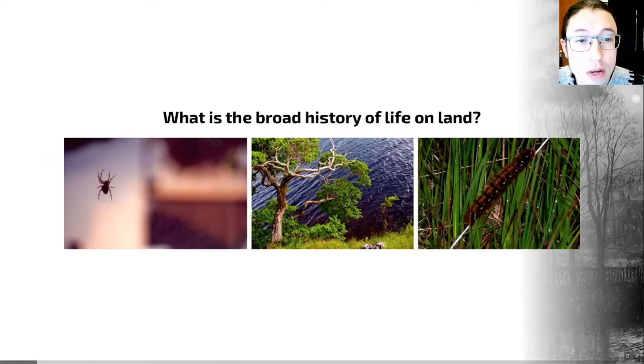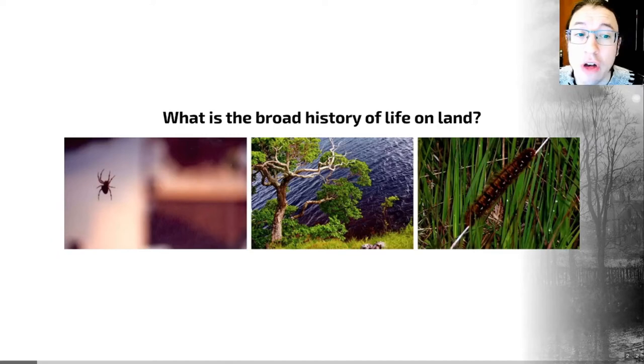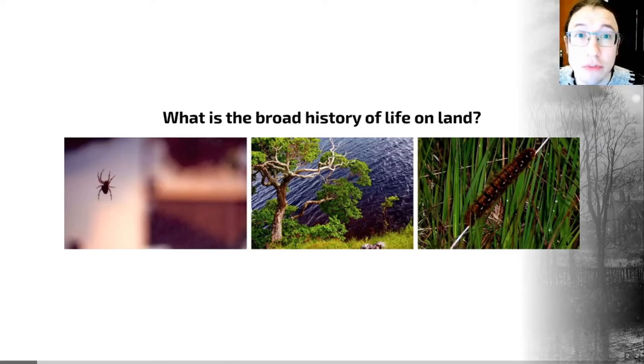What we do know is that plants migrated onto land first, followed by creepy crawlies — arthropods — and then vertebrates more recently.